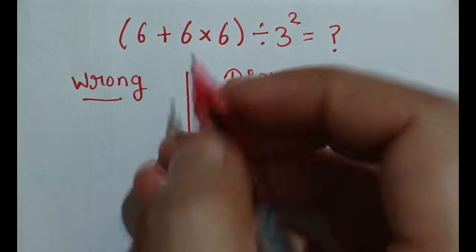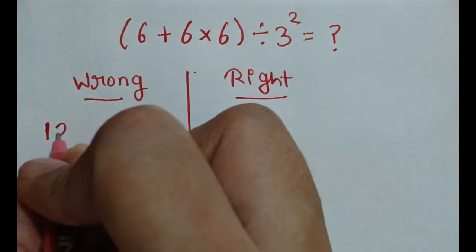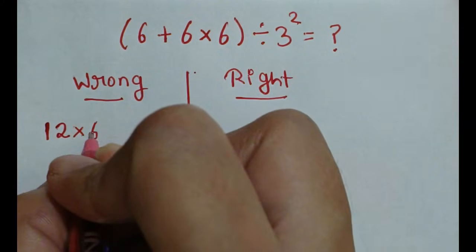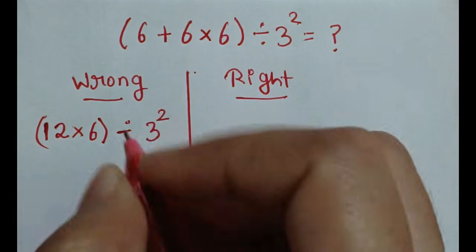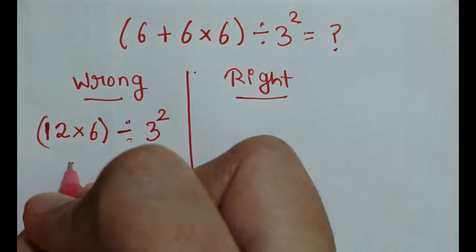So here, 6 plus 6 which is 12, 12 times 6, divide by 3 square. Then 12 into 6 which is 72.